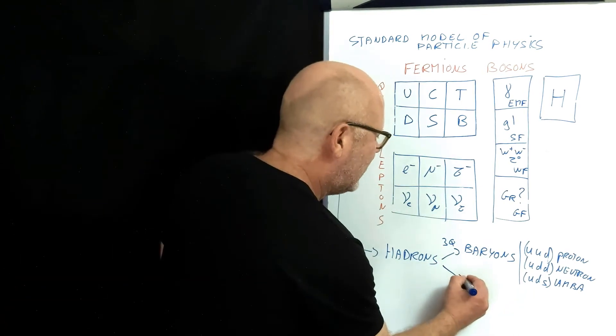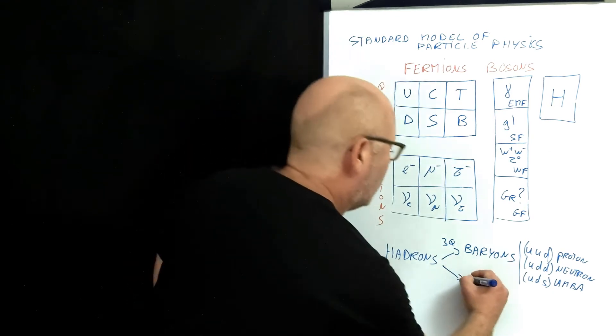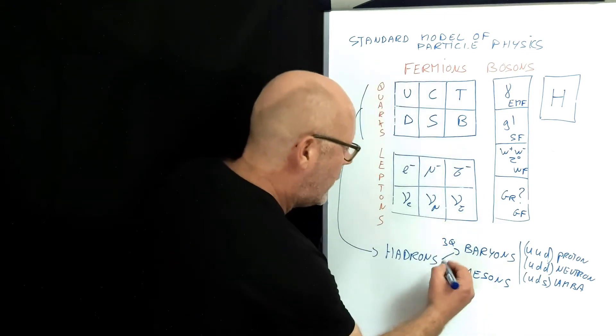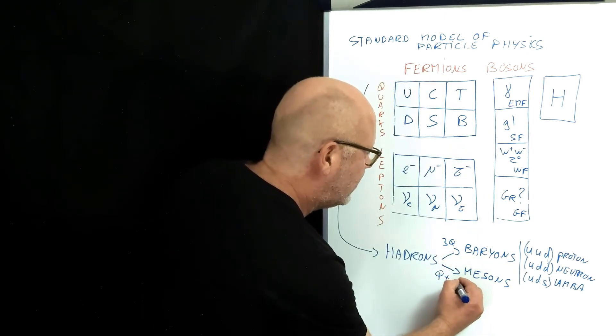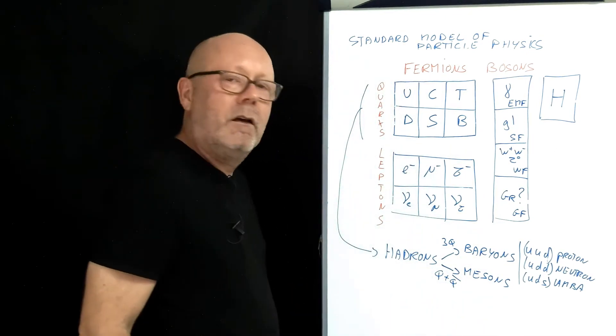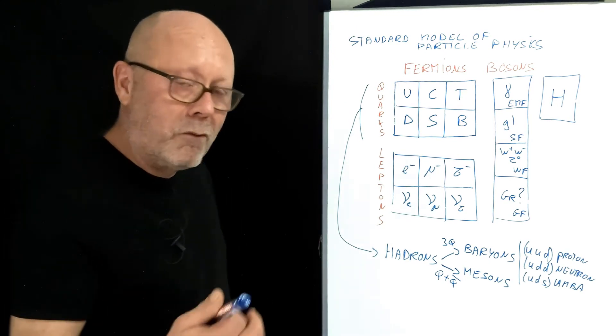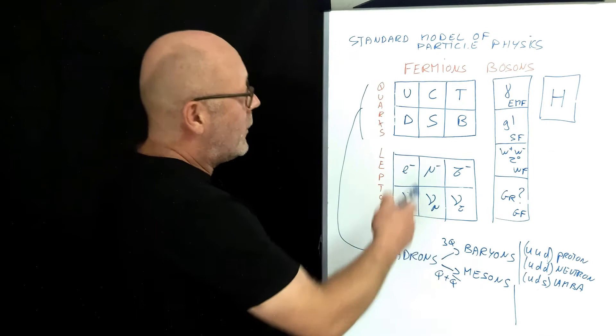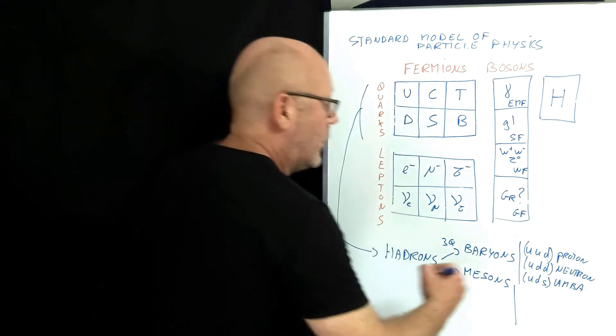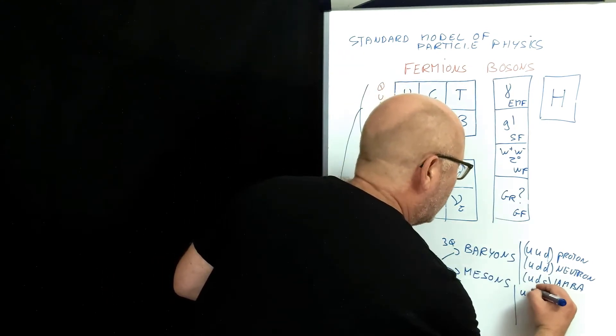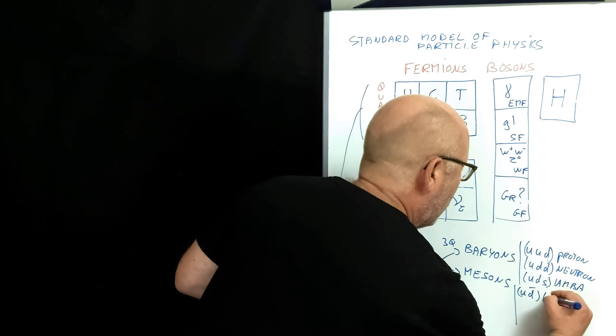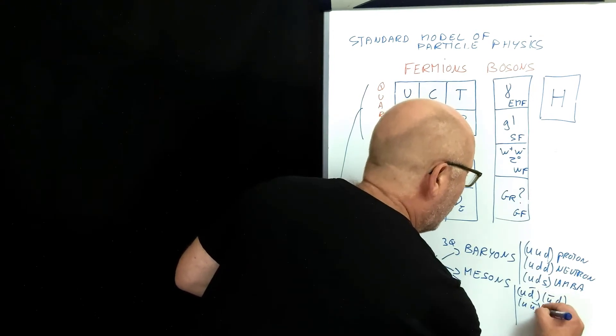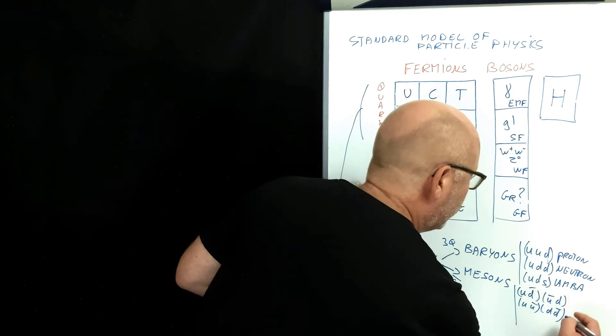There's another subfamily of hadrons called mesons. These are formed when you combine a quark plus an anti-quark. For example, you've got the pion family of mesons. You get a pion by combining an up and a down. So, you've got up anti-down, or anti-up down, or up anti-up, or down anti-down. That's pions.